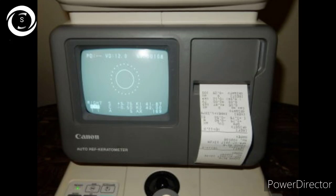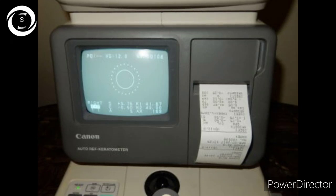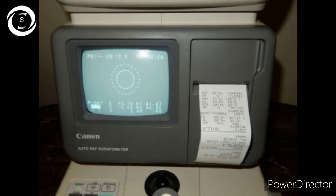Keratometry has limitations. It measures the refractive state of a small central area of 3 to 4 millimeters and loses accuracy when measuring very flat or very steep corneas.